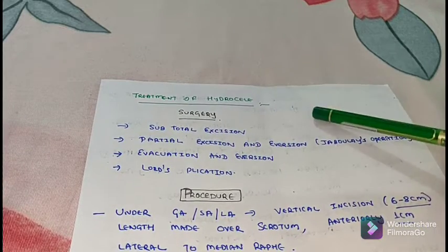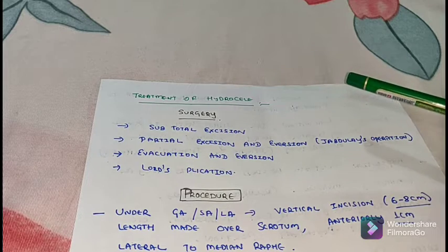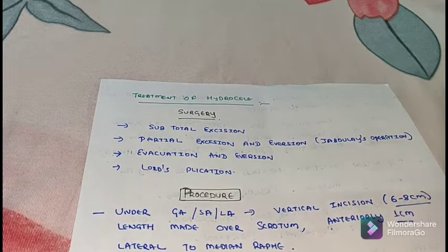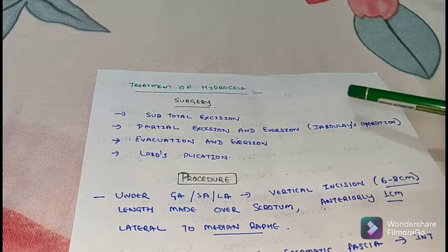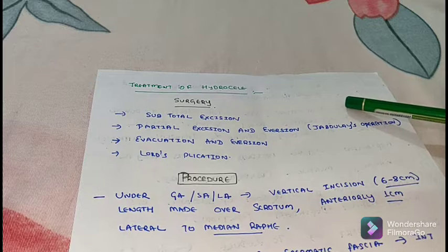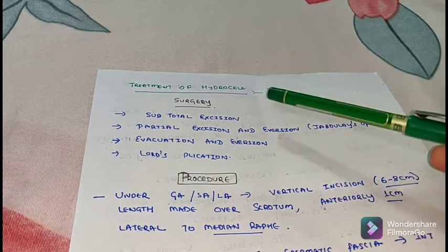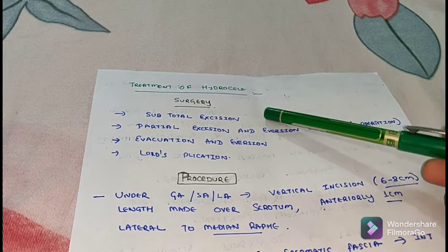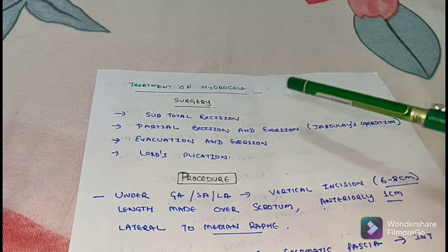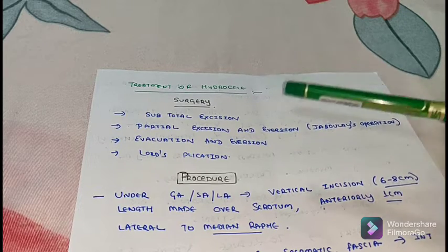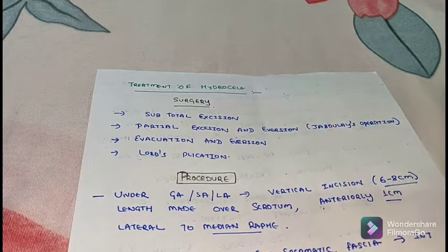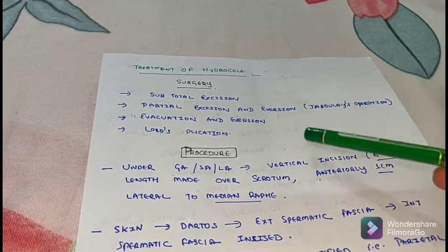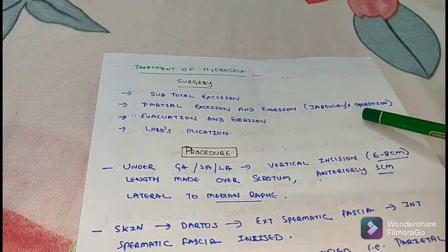Now I will discuss the treatment of hydrocele. Hydrocele is common nowadays. The main treatment is surgery — it cannot be treated by medications alone. Different types of surgery include: subtotal excision, partial excision, eversion, Jaboulay operation, evacuation and eversion, and Lord's plication.